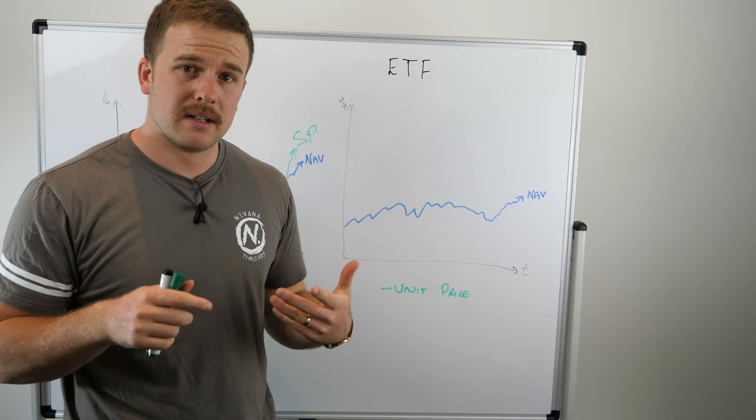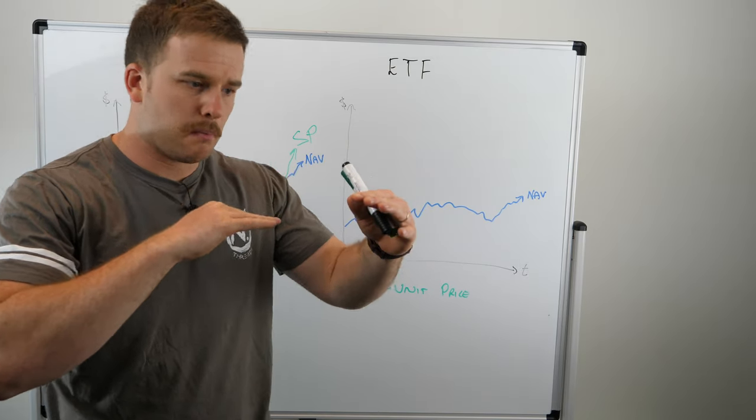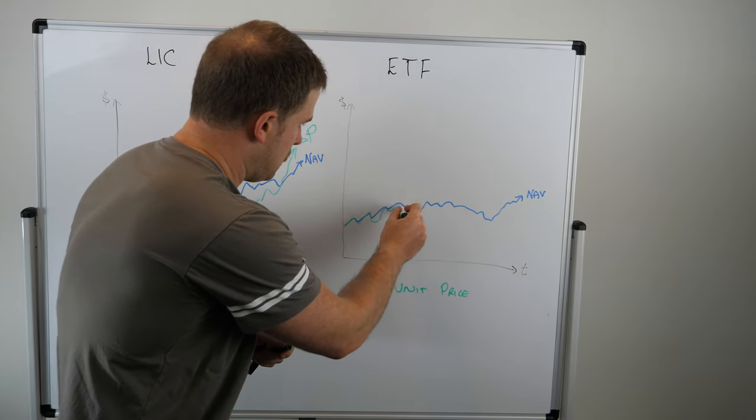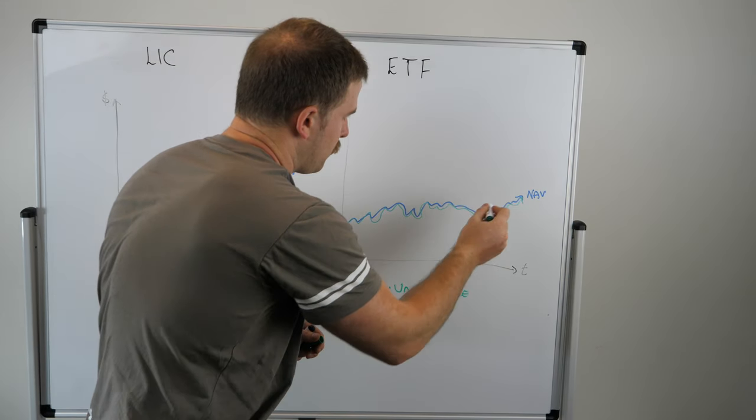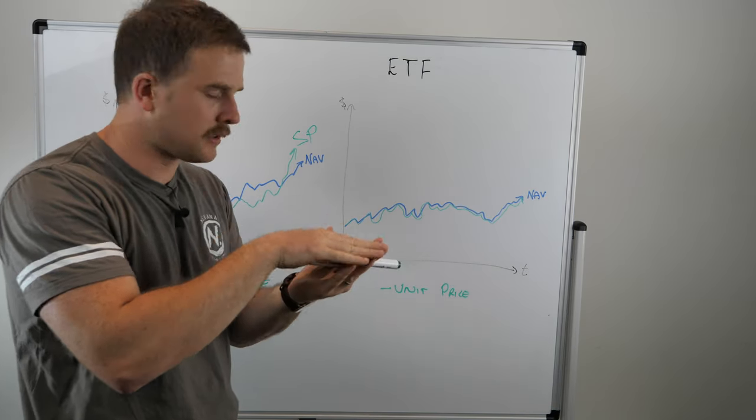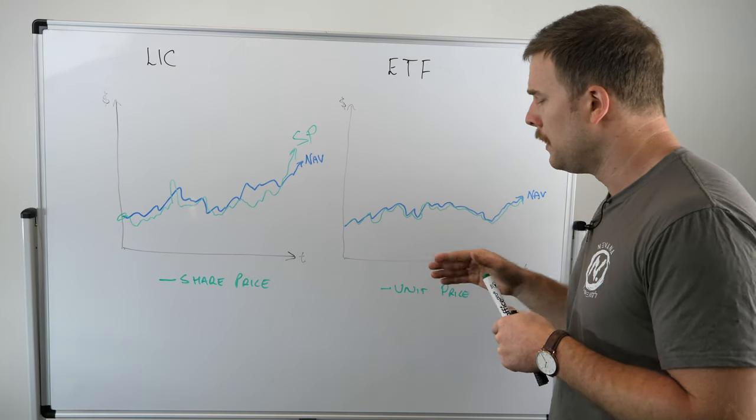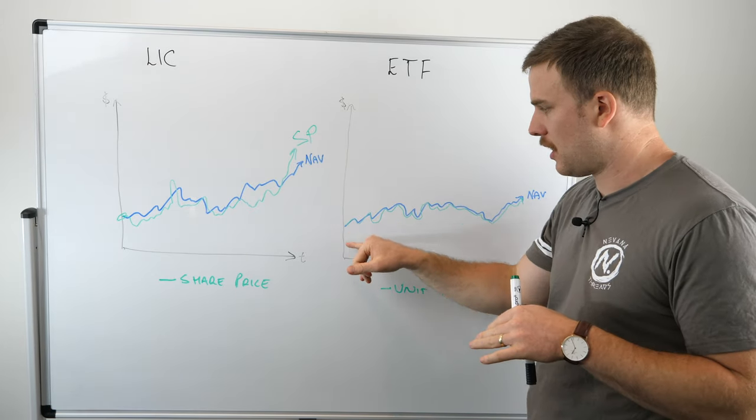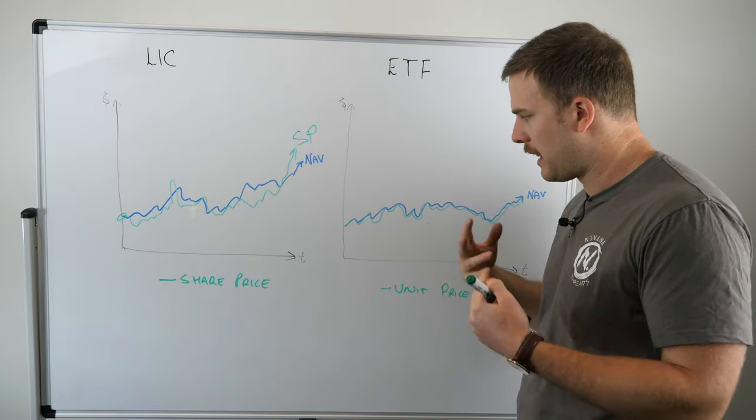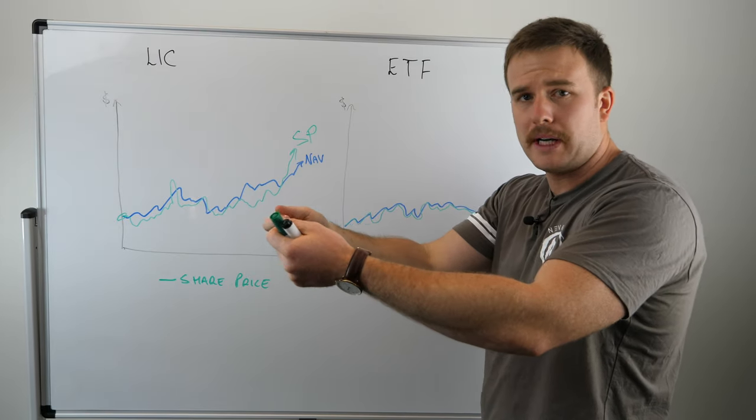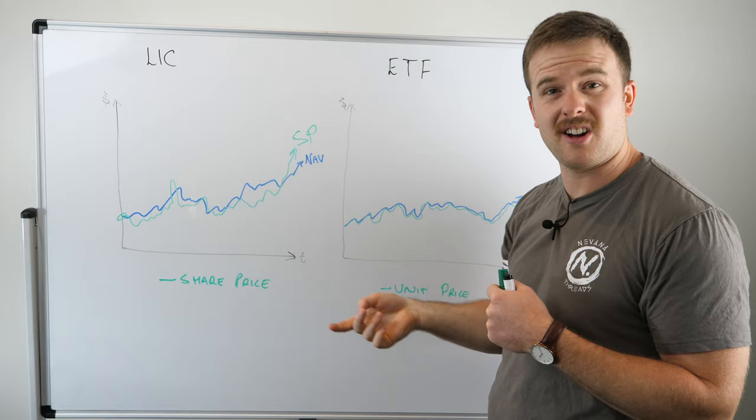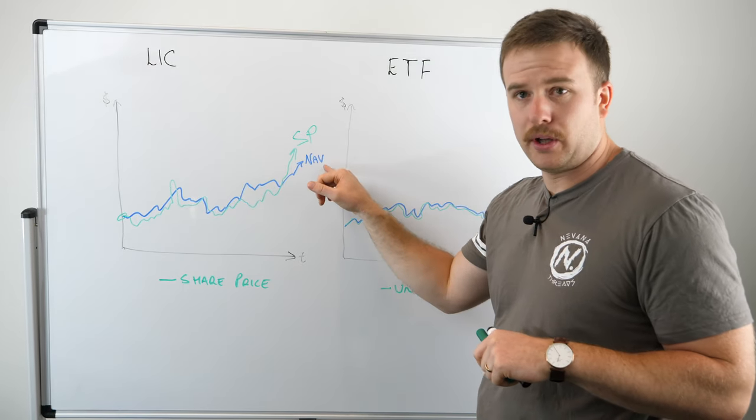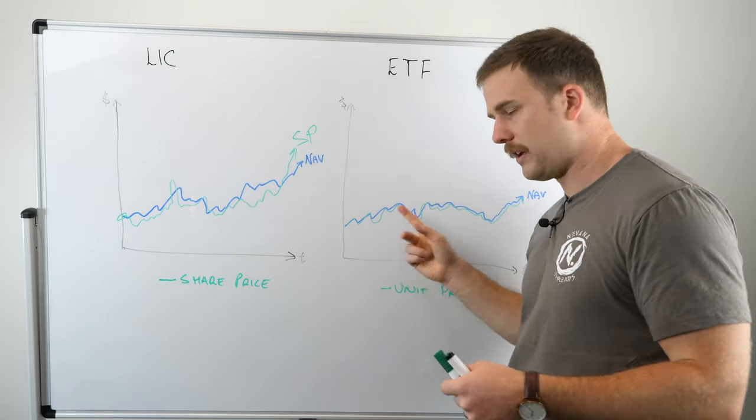An exchange-traded fund is different because an exchange-traded fund typically just buys and sells whatever investment is inside the trust or the fund. You can see here that the green line hugs the blue line a lot better. The reason this happens is because the ETF provides you with a way to get in and out of the investments that are inside the ETF. All the ETF does is if you invest your money, you immediately get back units that are equivalent to the investments inside the trust.